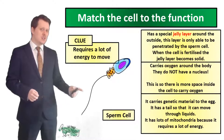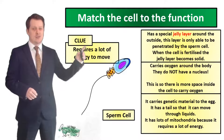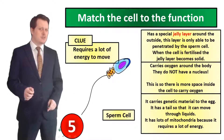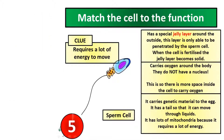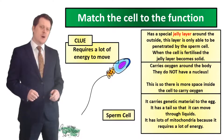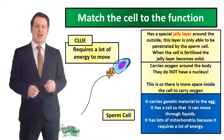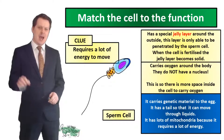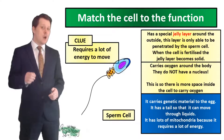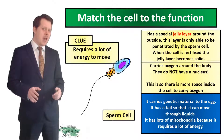Our third specialized cell is the sperm cell, which requires a lot of energy to move. Our clue — that it requires a lot of energy — lets us match this cell to its function. It carries genetic material to the egg, has a tail so it can move through liquid, and has lots of mitochondria because it requires a lot of energy. Remember, mitochondria release energy through a process called aerobic respiration.